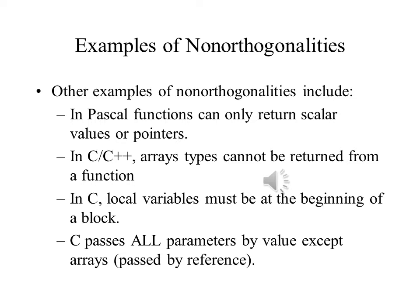There are several non-orthogonalities in various programming languages. Pascal functions can only return scalar values; returning an array requires passing it back as a reference parameter. C and C++ have a similar restriction, which is usually bypassed by returning a pointer to the array. And the only way to pass variables by reference in C requires the explicit use of pointers, which can be a little clumsy and makes programs written in the language less readable.